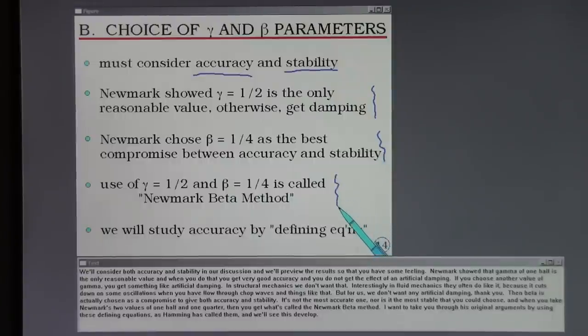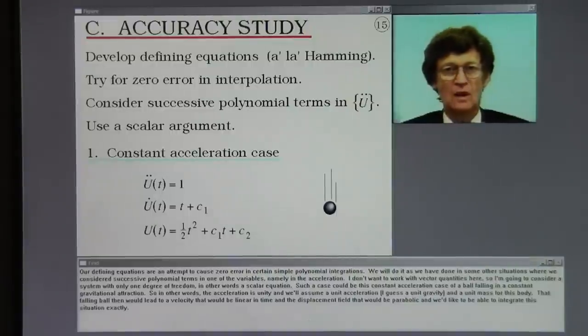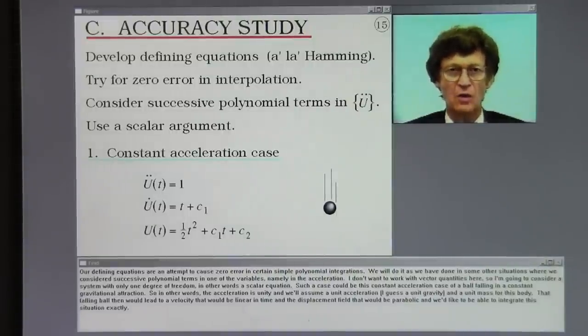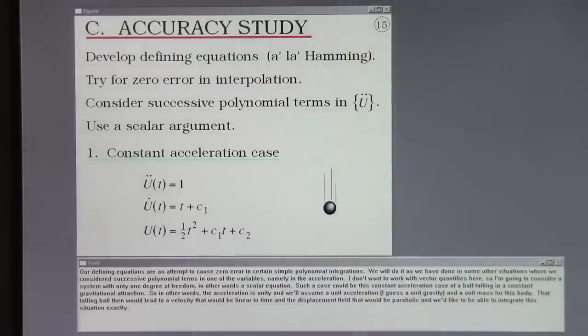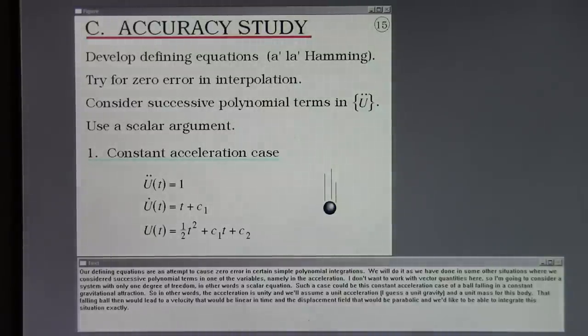If you choose another value of gamma you get something like artificial damping. In structural mechanics we don't want that. Then beta is actually chosen as a compromise to give both accuracy and stability. It's not the most accurate one nor is it the most stable that you could choose. And when you take Newmark's two values of one half and one quarter then you get what's called the Newmark beta method. I want to take you through his original arguments by using these defining equations as Hamming has called them. Our defining equations are an attempt to cause zero error in certain simple polynomial integrations. We will do it as we have done in some other situations where we consider successive polynomial terms in one of the variables namely in the acceleration.